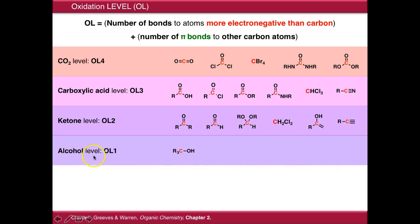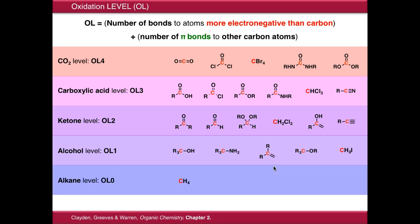Dropping down again, we're at the alcohol level, where we're forming one bond to an electronegative atom. This includes alcohols, amines, but also alkenes, because alkenes form one pi bond to another carbon atom. It also includes ethers and monohalides. At the very bottom is oxidation level zero, the alkane level, which includes simple alkanes, branched alkanes, and compounds where carbon is bonded to something more electropositive than carbon, such as boron or silicon.